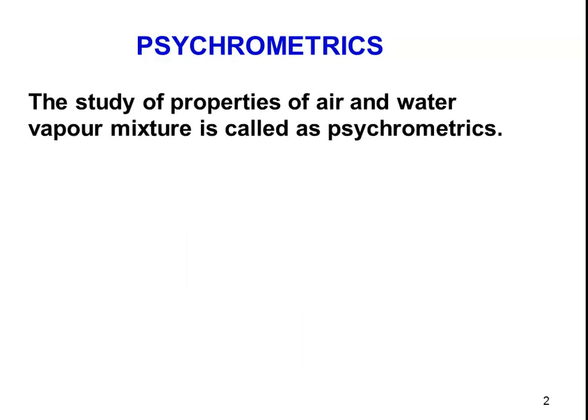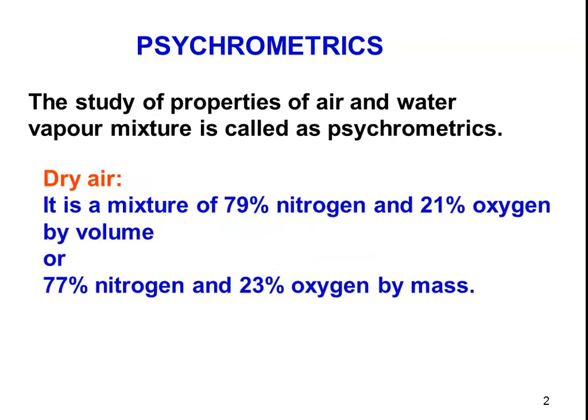The study of properties of air and water vapor mixture is called psychrometrics. Even atmospheric air contains a certain percentage of water vapor. How to recognize that atmospheric air contains water vapor is from sweating — human body feels sweating during hot days, due to the amount of water vapor present in the atmospheric air. More water vapor means more sweating. The dry air is a mixture of 79% nitrogen and 21% oxygen by volume, or 77% nitrogen and 23% oxygen by mass.